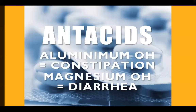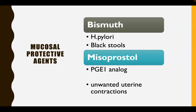What about antacids? Aluminum hydroxide causes constipation. Magnesium hydroxide causes diarrhea. Which of the mucosal protective agents causes black stools? It is bismuth — B for black, B for bismuth. Which of the mucosal protective agents is a prostaglandin E1 analog that causes unwanted uterine contractions and is the most widely used abortifacient in the Philippines? It's misoprostol, or Cytotec.